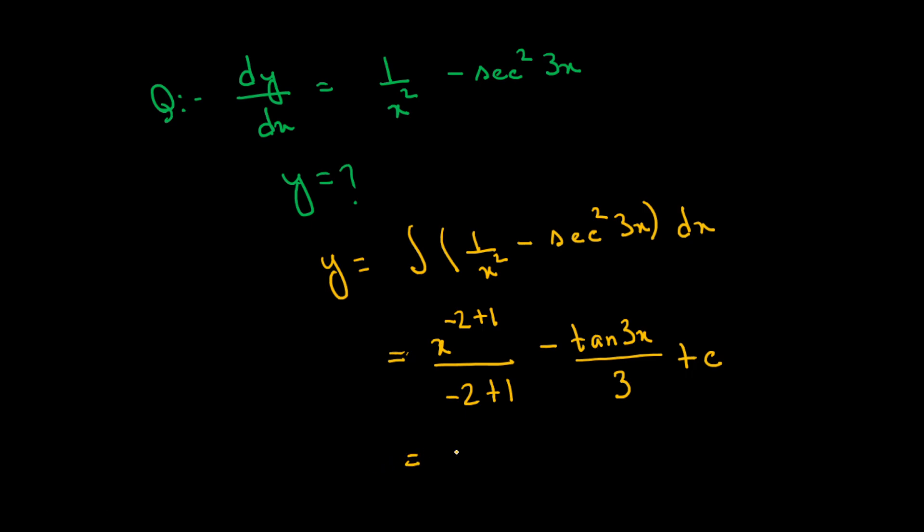x to the power minus 1 divided by minus 2 plus 1 is minus 1. This gives minus tan 3x divided by 3 plus c.